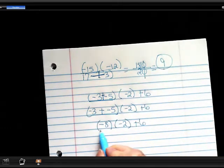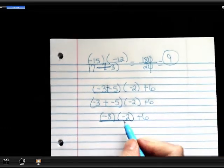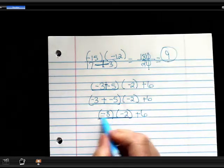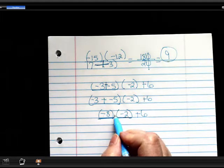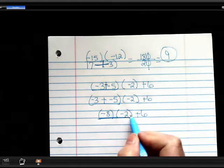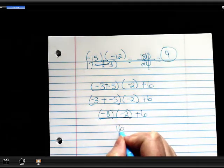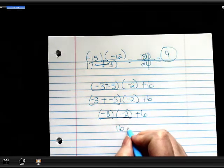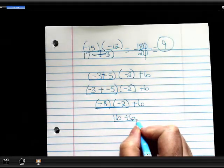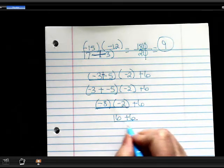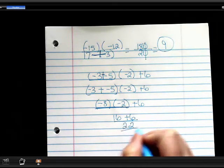The next thing we do is multiply. What's negative 8 times negative 2? Remember, if they're right next to each other with no symbol, they're a multiplication. So 8 times 2 is 16. Negative and a negative is a positive. And then what's 16 plus 6? 22.